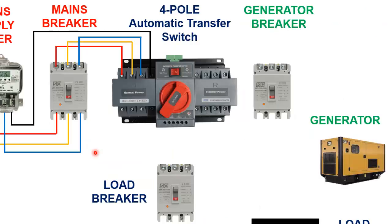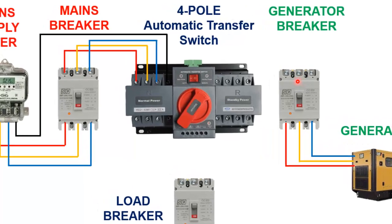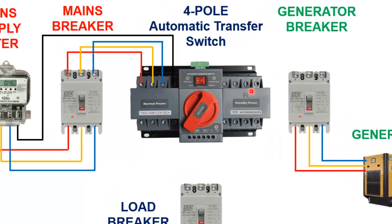Now similarly connect all three phases of the generator with the input of the generator circuit breaker. Now connect the output side of the generator breaker and neutral wire with input terminal number two of ATS.